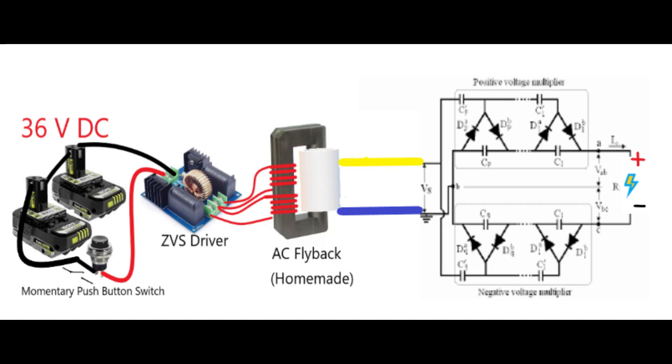When the transformer secondary has more turns than the primary, the voltage increases while current decreases, and this is why transformers with this ratio are called step-up transformers because they increase or multiply the voltage.